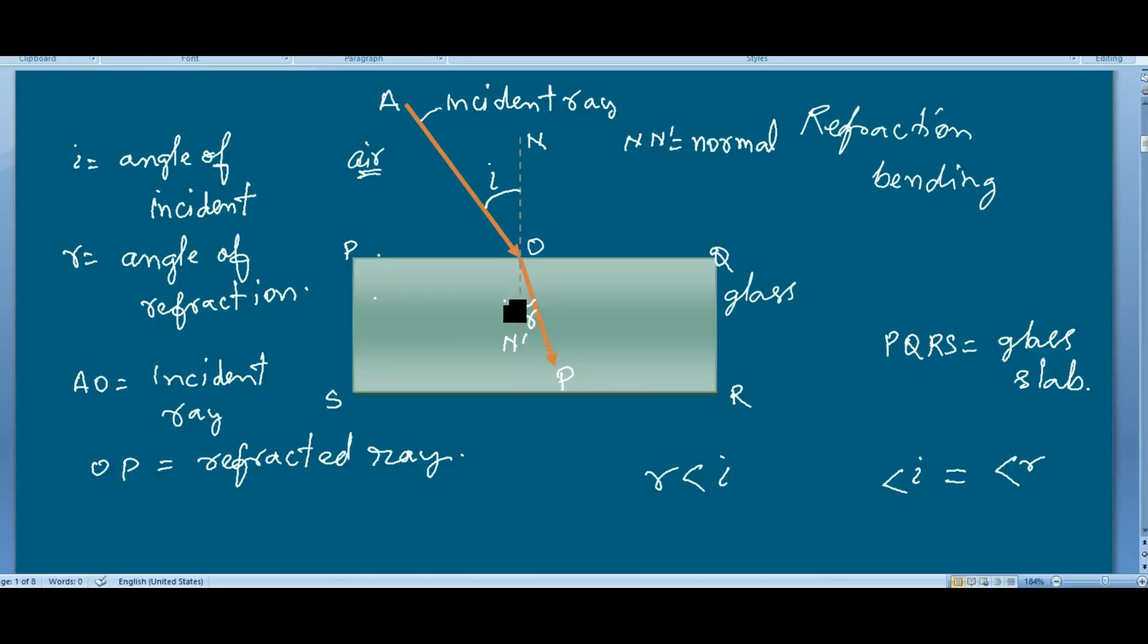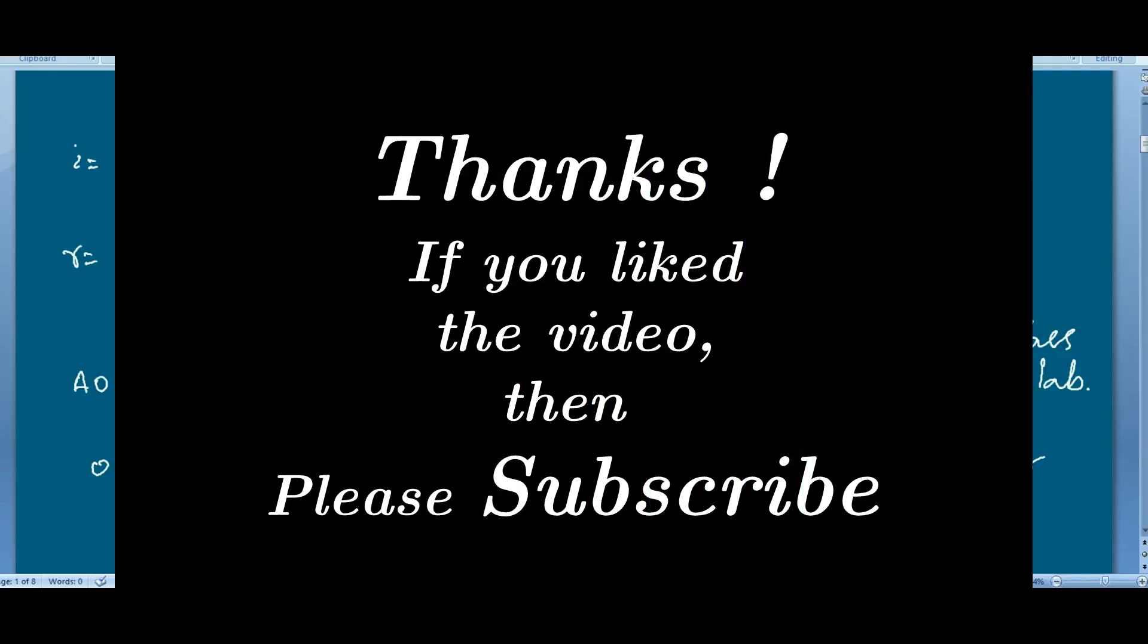One thing you have to remember: when light passes from a rare medium to a denser medium, it bends toward the normal. Why it happens, we will explain in the next video.